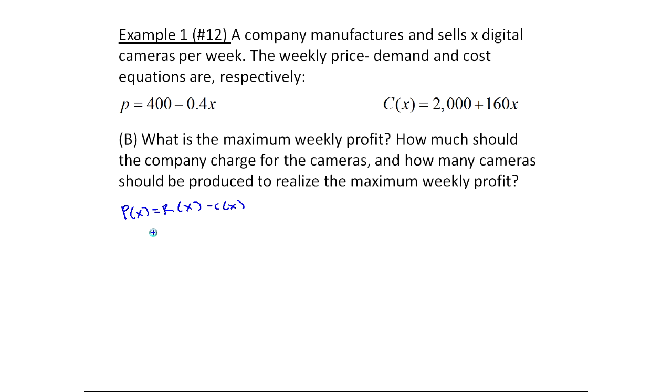Now we just had r of x a moment ago. R of x was 400x minus 0.4x squared. And so we now subtract c of x, which is 2000 plus 160x. Okay, so I end up with 400 minus 160, so that would be 240x, and then minus 0.4x squared, and then minus 2000. So this is our profit function.